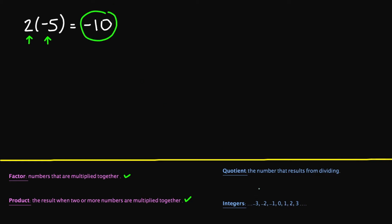Your integers — remember what integers are. Integers are negative numbers, the number 0, and positive numbers. So in this example with the 2 and the negative 5, the number 2 is an integer and also negative 5 is also an integer.